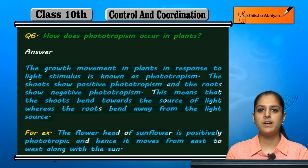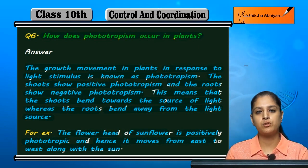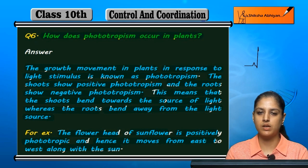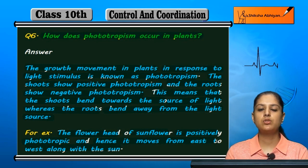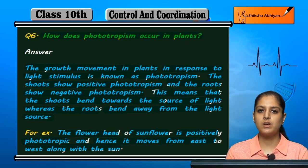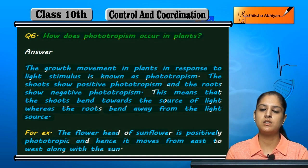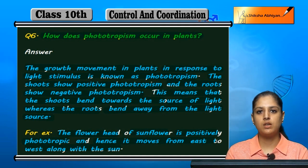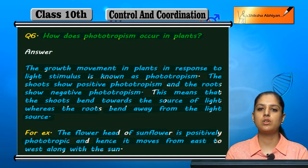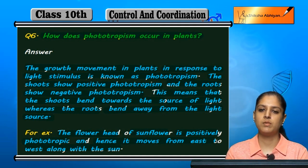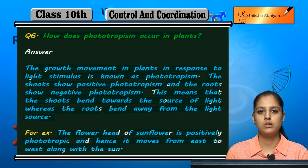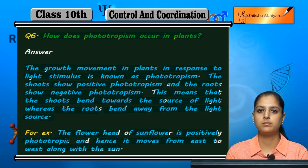The flower head shows positive phototropism, but the roots grow downward into the earth, meaning they show negative phototropism and grow away from the light source.